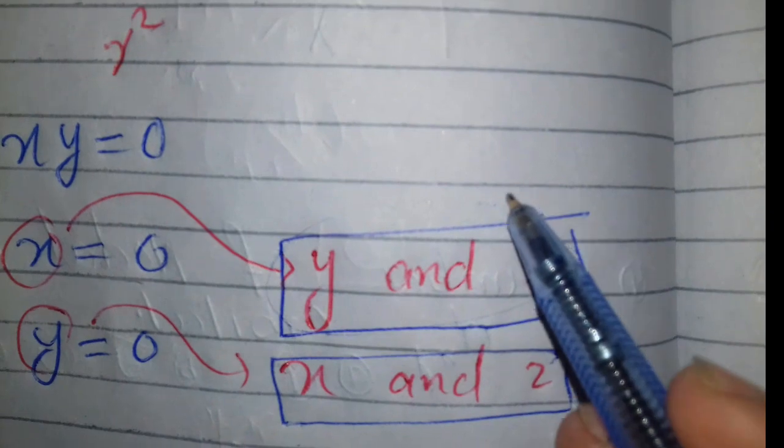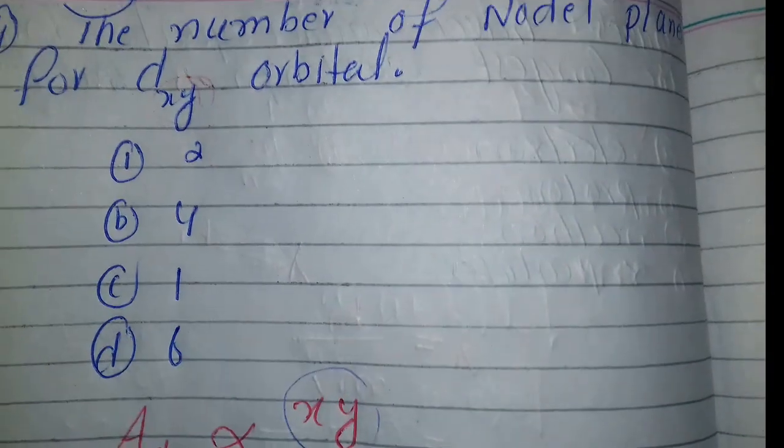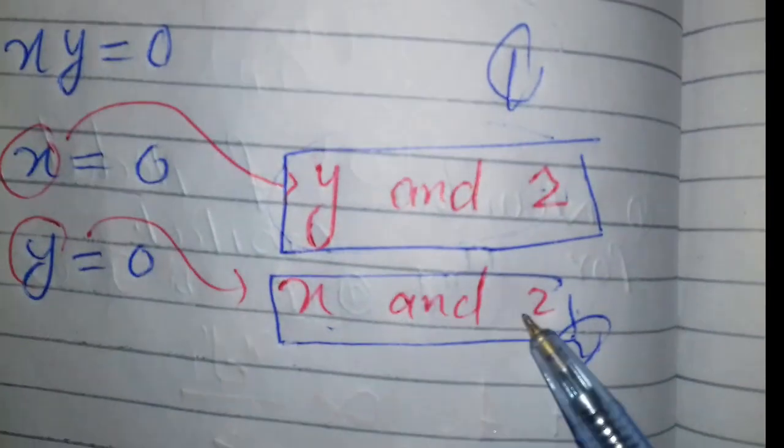These are the nodal planes. There are two: one and two. The answer to this MCQ is 2. There are two nodal planes, YZ and XZ, for d_xy where the electron density is zero.